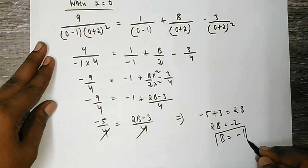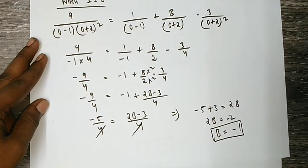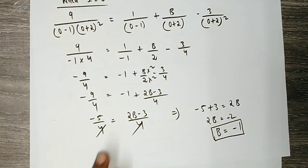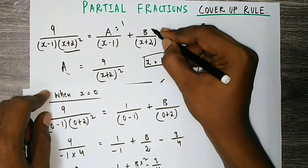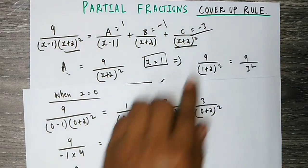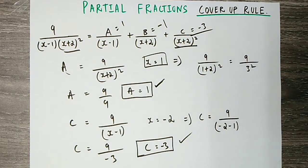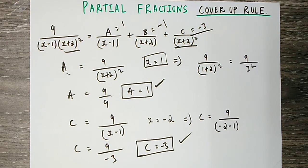So B equals minus 1. Finally, A equals 1, B equals minus 1, C equals minus 3. If you like this video, please like and share it with friends and classmates. Please check this trick, and if you want to know how it works, please comment and share this video. Try this method.